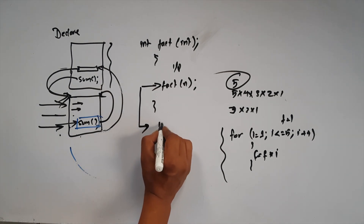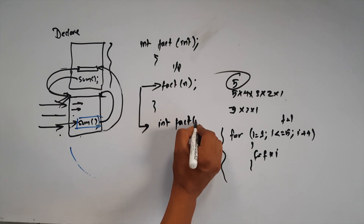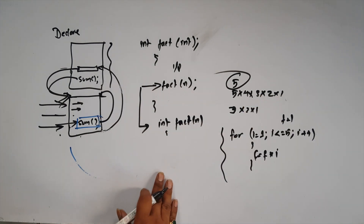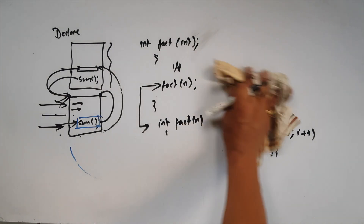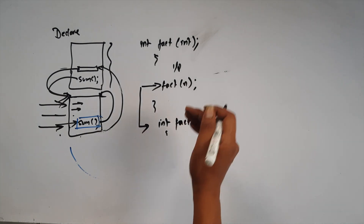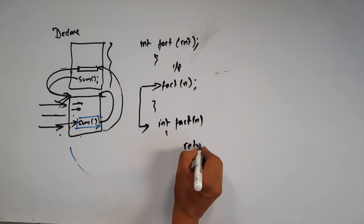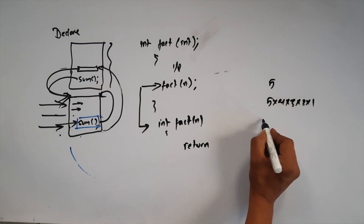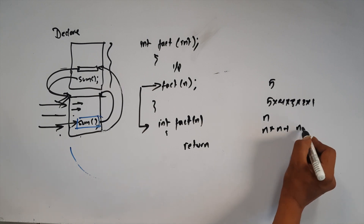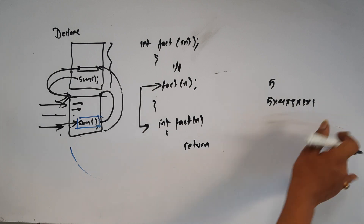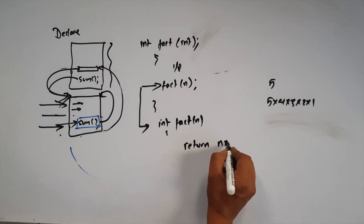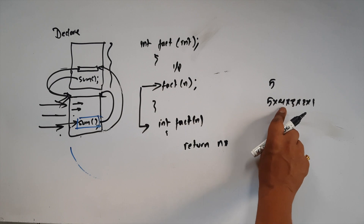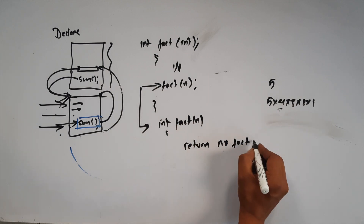We call int fact(n). What happens? If we have factorial of 1, we return 1. Otherwise, this function will return n × fact(n-1) — that is, n into n minus 1, n minus 2. So every time it calls fact(n-1).